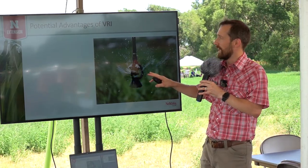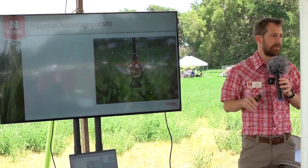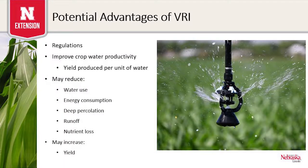There are several advantages to VRI. One is the potential to comply with future regulations around water quantity and application amounts — whether for fertigation, chemigation, or groundwater. Many entities are involved in regulating irrigation in the state, at the NRD, state, and federal levels. Having and using technology like this helps us prepare for the future and address any types of regulations that might come.